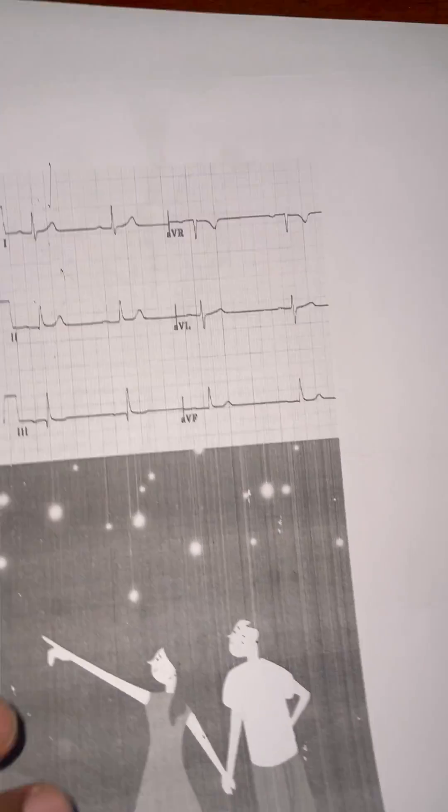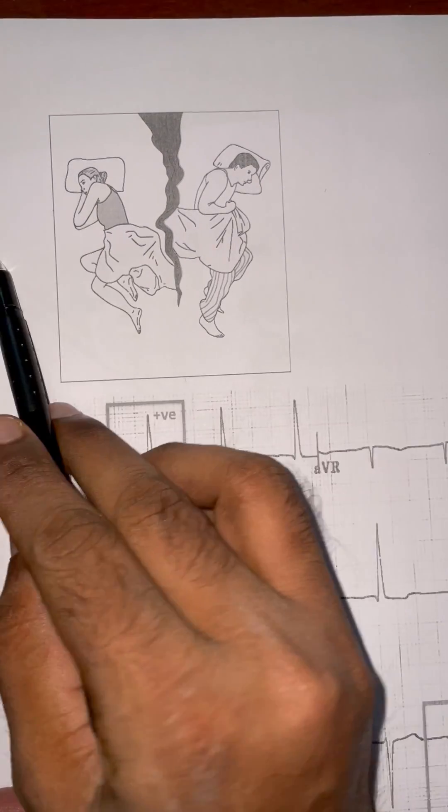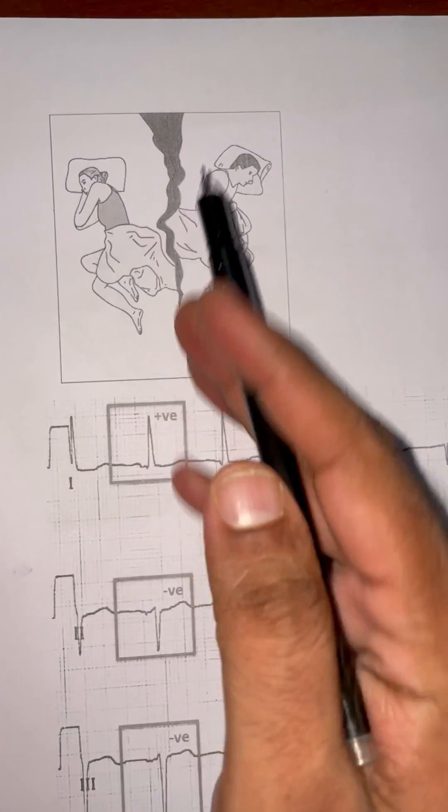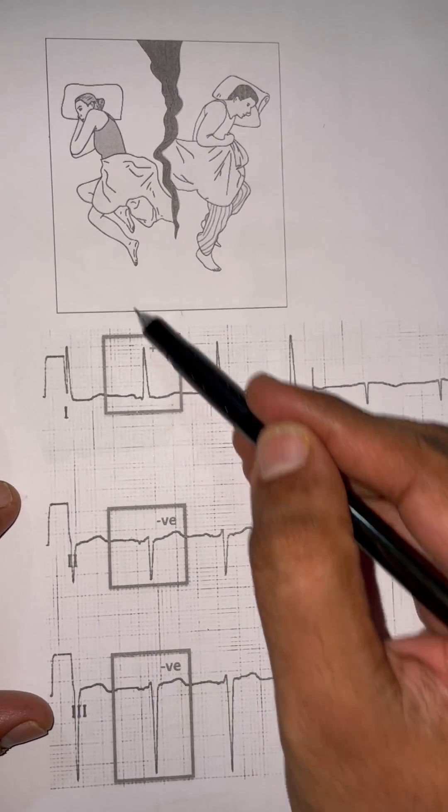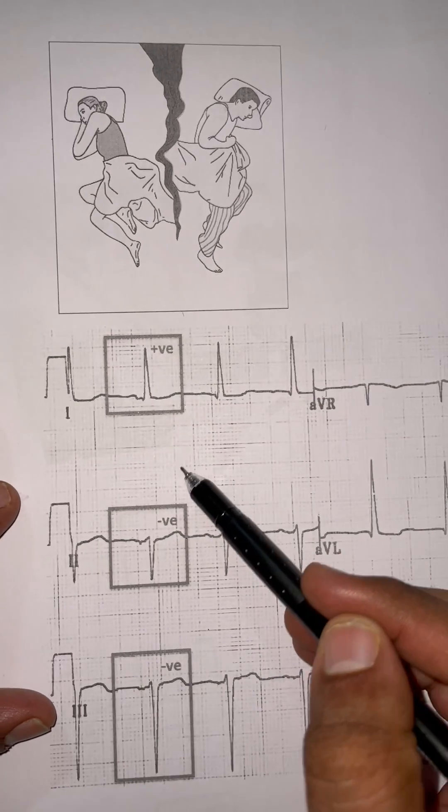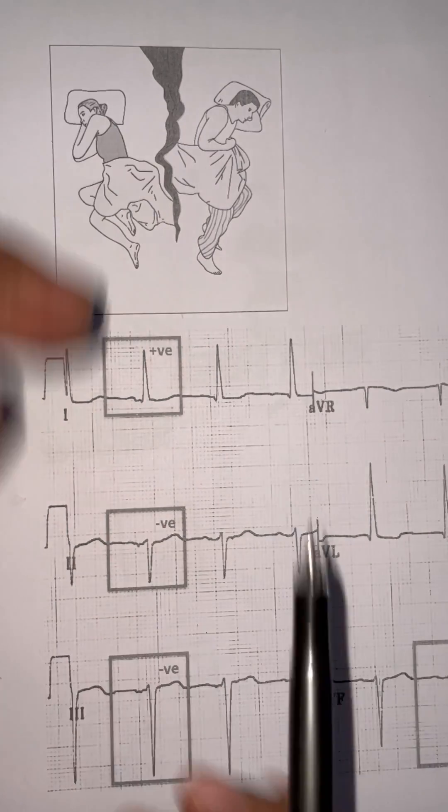The next, the boy is looking on one side, the girl is on the other side, they already left each other. So in the lead one, the QRS is positive, looking upwards. And in the lead two, it is looking downwards. They left each other, left axis deviation.